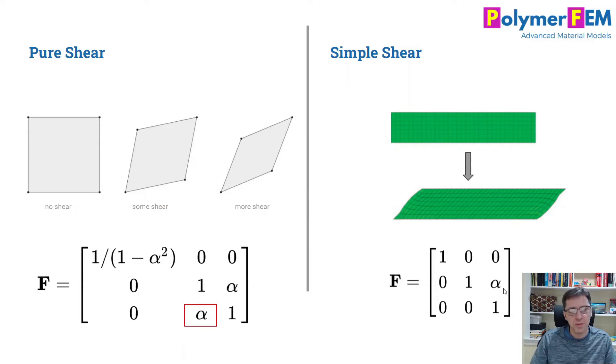Pure shear is a little different. You basically take your specimen and pull on it in the diagonal direction and you rotate it at the same time, as you can see on this little schematic. The deformation gradient in this case is very similar to simple shear, except that both off-axis terms are alpha. So alpha, alpha in these two off-axis positions, whereas simple shear has just one of them.